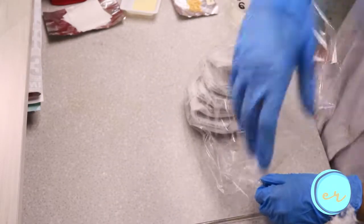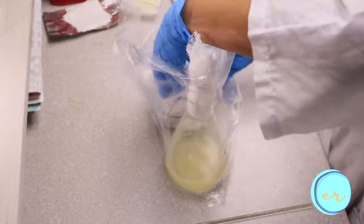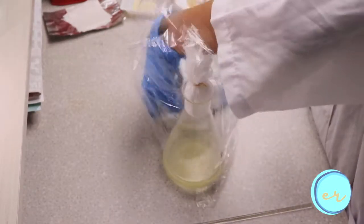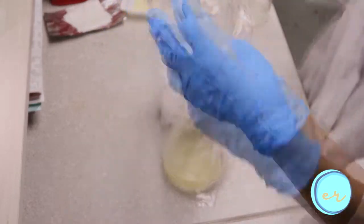Place this in an autoclavable plastic bag and sterilize using the autoclave. At this point, we may now include petri plates which have been cleaned, wrapped, and placed in an autoclavable plastic bag to be sterilized together with the prepared medium.